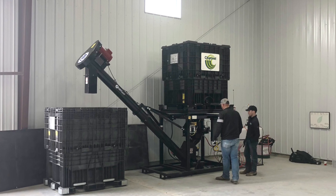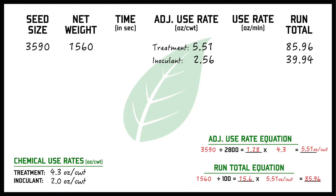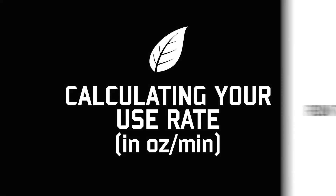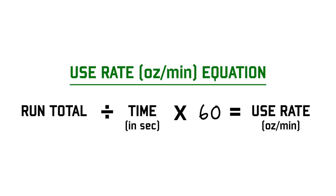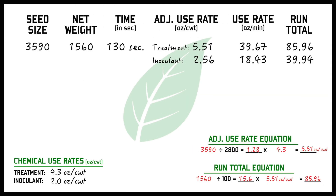After your run is complete, place the full box of naked seed back onto the treater. Convert your recorded time into seconds, then document it onto the whiteboard. You will now use that runtime to determine your use rate in ounces per minute. To do so, simply divide your run total by the total seconds, then multiply by 60. The result will be your use rate or flow rate that you'll need to set your pump stands to on the flow meter readout screen.